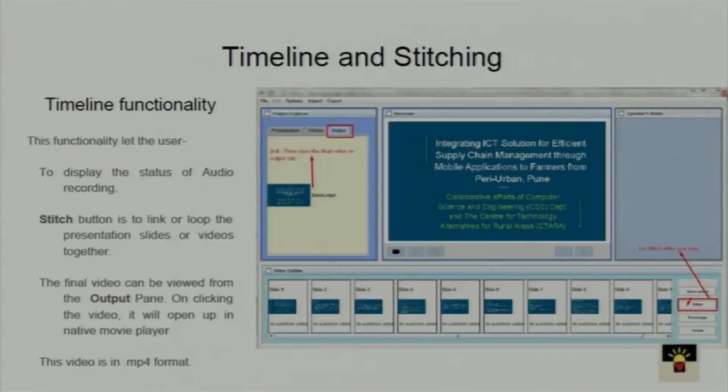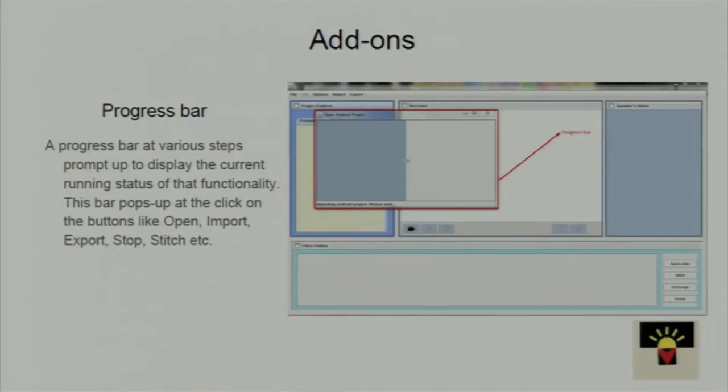Stitching is the most important feature — it's currently not working on the Play Store version but works on the desktop version. Stitching means taking individual audios and videos, then combining them to make a low-footprint video. There are also some add-ons like progress bar and delete options.